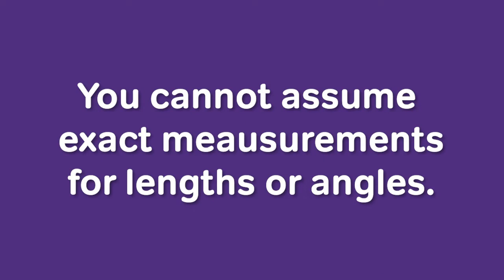Finally, for both data sufficiency and problem solving, you cannot assume exact measurements for lengths or angles. Although an angle might appear to have a certain measurement, you cannot assume it is what it appears to be. This is most commonly an issue with right angles: unless a diagram is marked with the square symbol in the corner or you're explicitly told there is a right angle, you cannot assume an angle equals 90 degrees. Be especially careful with triangles that look like right triangles — if you're not told they are and there's no box in the corner, you are not dealing with a right triangle.